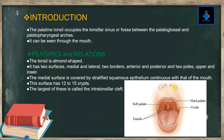Introduction: The palatine tonsil occupies the tonsillar sinus or fossa between the palatoglossal and palatopharyngeal arches. This is where it is located, and generally it can be seen through the mouth itself.